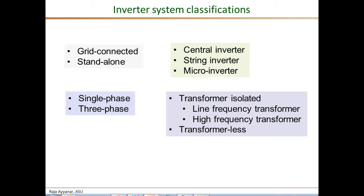Finally, based on the type of PV array configuration, the number of inverters used, and the type of grid connection, we can have three more types: central, string, and micro-inverters. The central inverter is a single large inverter for an entire array of series-connected PV panels. The string inverter is one inverter per series-connected string, used mostly in residential applications. The micro-inverter has one inverter per panel connected directly to the AC grid.